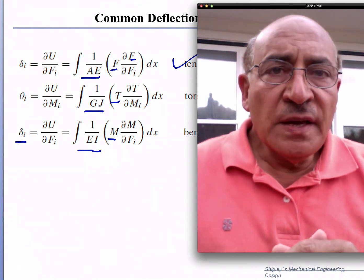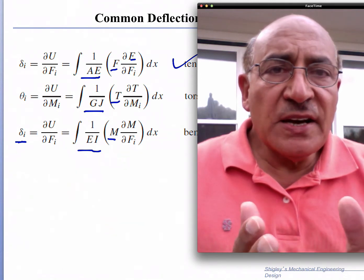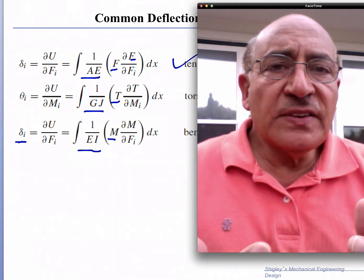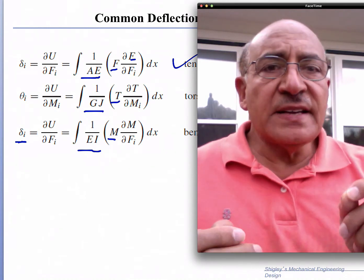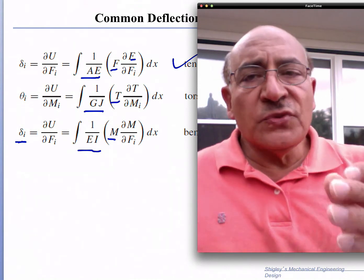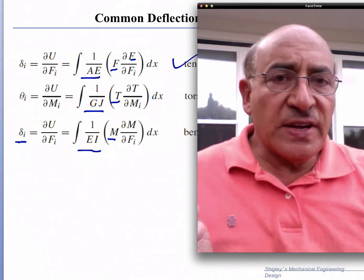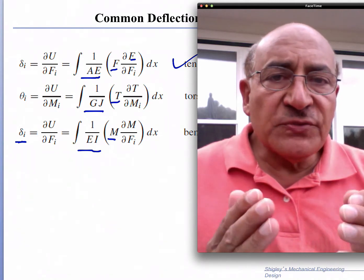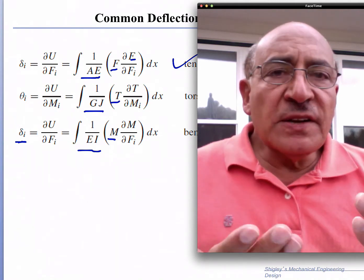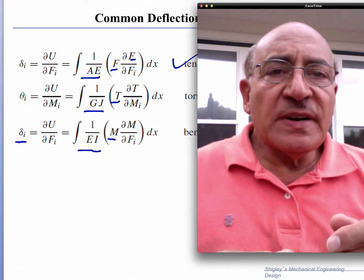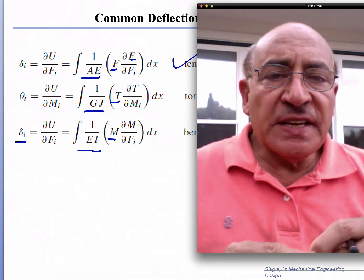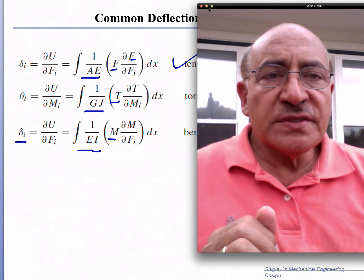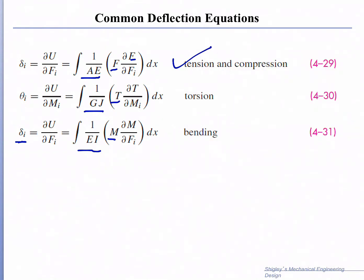It is very important to note that δᵢ is the deflection under force Fᵢ. If we have a system of forces, the whole system produces a combination of effects, and one of them will be Fᵢ. We're interested in finding the deflection at that specific location under that specific force. Let's take an example to see how it works.